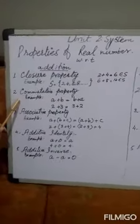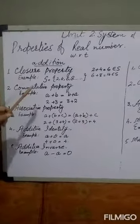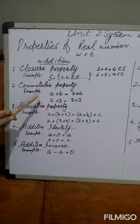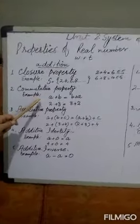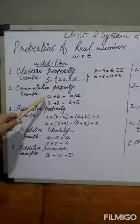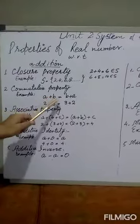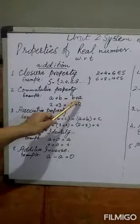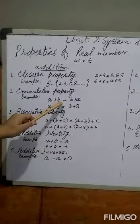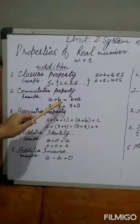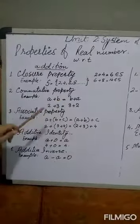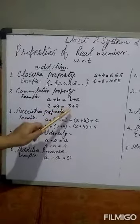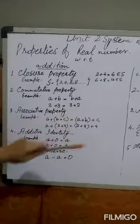Commutative property: For real numbers A and B, A plus B equals B plus A. For example, 2 plus 3 equals 3 plus 2.